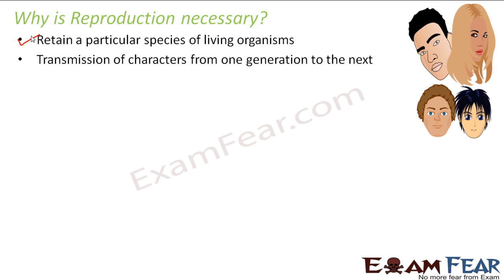In this picture you can see a couple and two kids. One kid has black hair, very similar to his father — he got this trait from his father. The other kid got brown hair, similar to the mother, so he inherited it from her. This transmission of characteristics from one generation to the next is known as inheritance, and this inheritance happens because of reproduction.